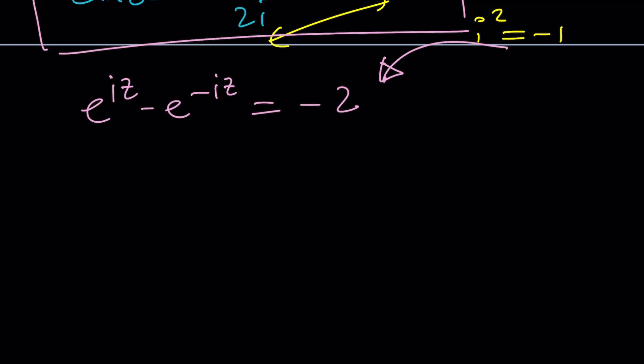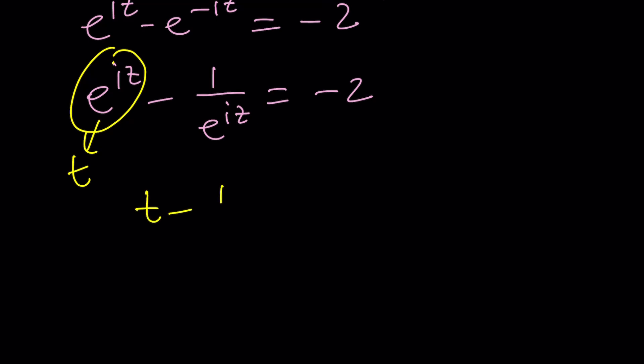This gives us e to the iz minus e to the negative iz equals 2i squared, which is negative 2. And this should become quadratic after a little bit of substitution. So I can write it as e to the iz minus 1 over e to the iz.